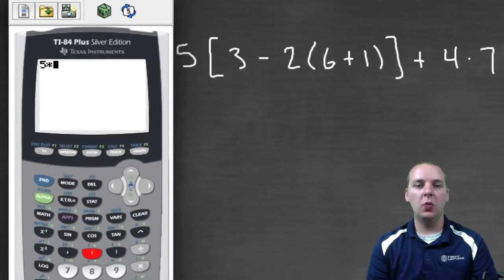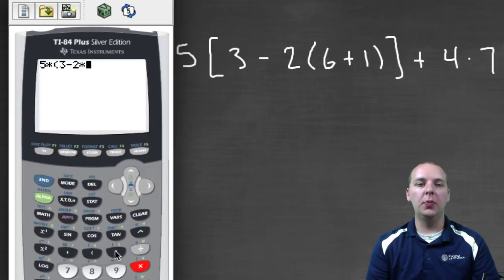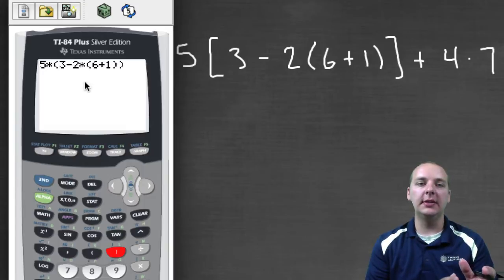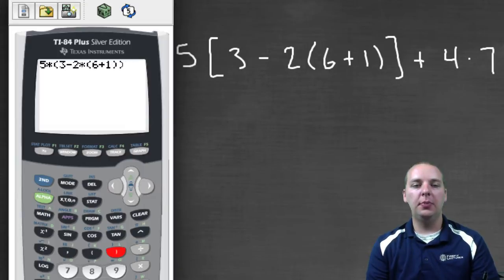Five times the quantity, I'll use a parenthesis, three minus two times, and then open another set of parenthesis, six plus one. Okay I'm going to close that parenthesis and that's closing the six plus one. Then I'll close another parenthesis and this is closing off the bracket. And you should be able to count, there should be the same amount of open parenthesis as there are closed parenthesis. You have to have one for each. And then plus four times seven.